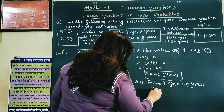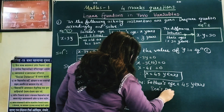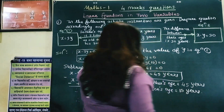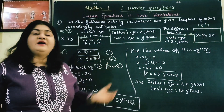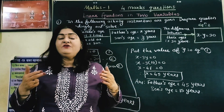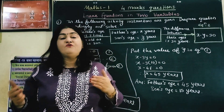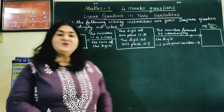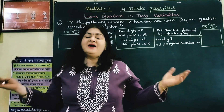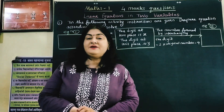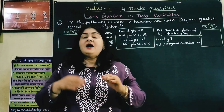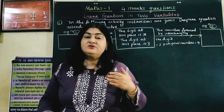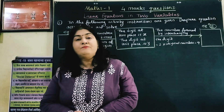Thus we obtained both equations, solved them, and found the values for father and son. Now we are on the third sum, where instructions are given and we have to read them, form linear equations in two variables, and then solve.